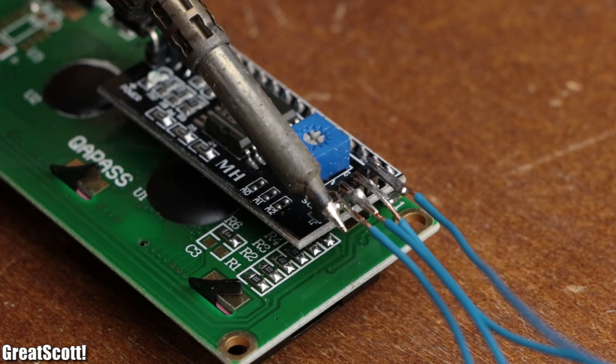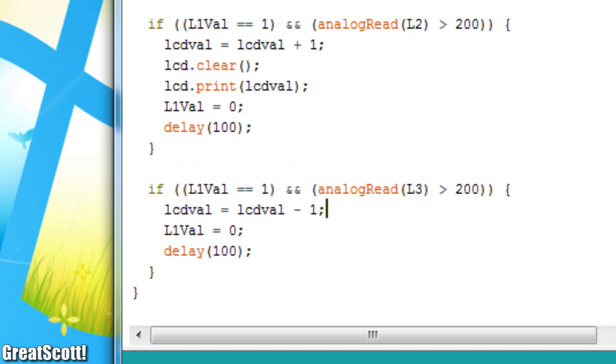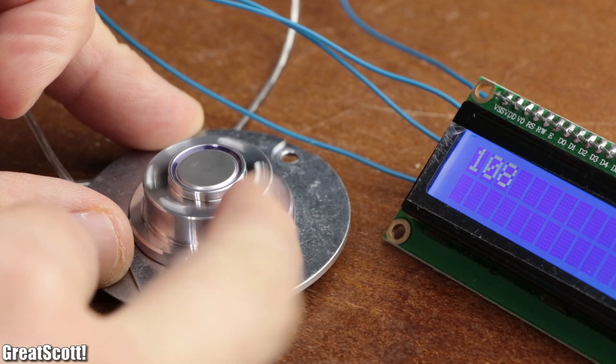But of course if we would add an LCD to the system and change a variable on it according to the motor's rotational direction, it would look a lot more impressive.